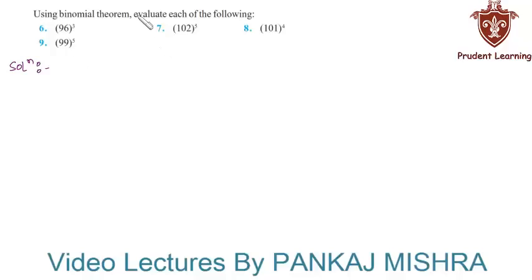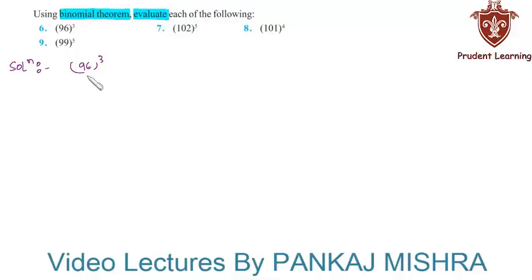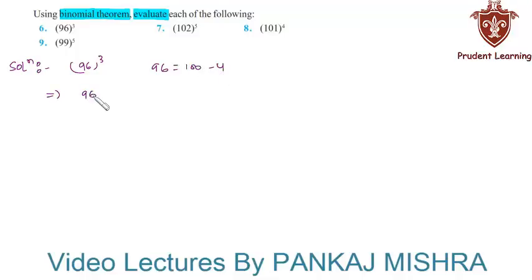In this question we have to evaluate each of the following using the Binomial Theorem. First let us begin with 96 cube. Here we will express 96 as a sum or difference of two numbers whose powers are easier to calculate, and then we will use the Binomial Theorem. We can write 96 as 100 minus 4.